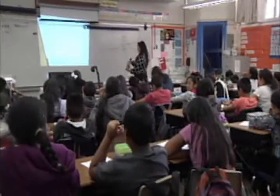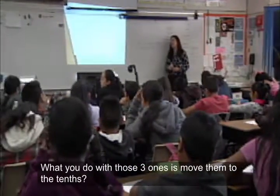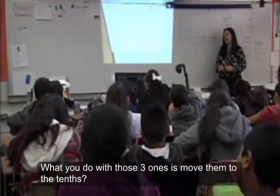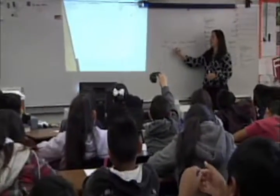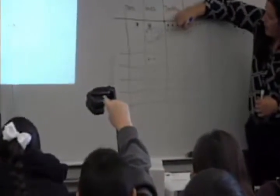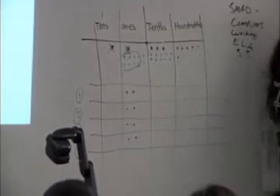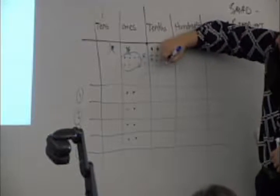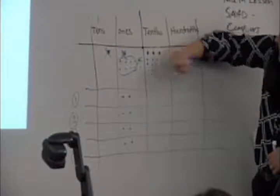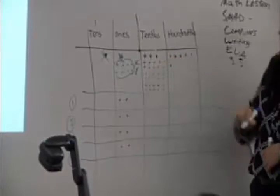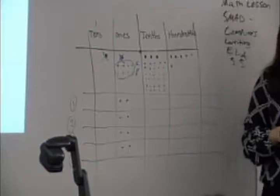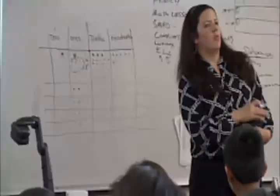The teacher converts each remaining one into ten tenths, counting three sets of ten together with students. This yields 30 new tenths plus the original 3 tenths, totaling 33 tenths. Teacher comments: 'There's a lot of tenths — a lot of dimes that my four friends are sharing equally. What should I do now with all of these 33 tenths?' Brandon Williams is called on for a suggestion.